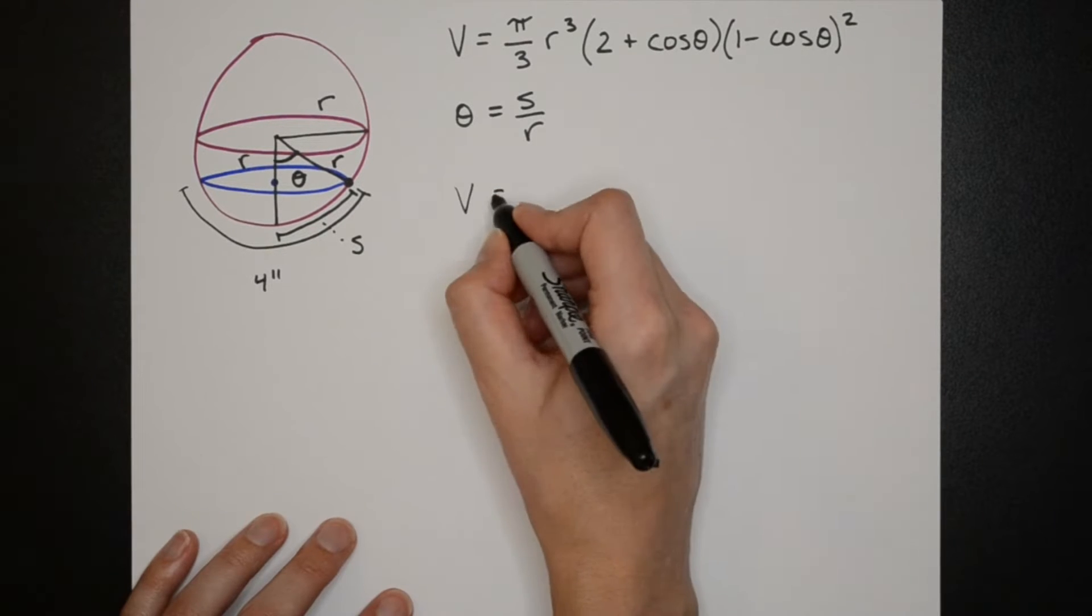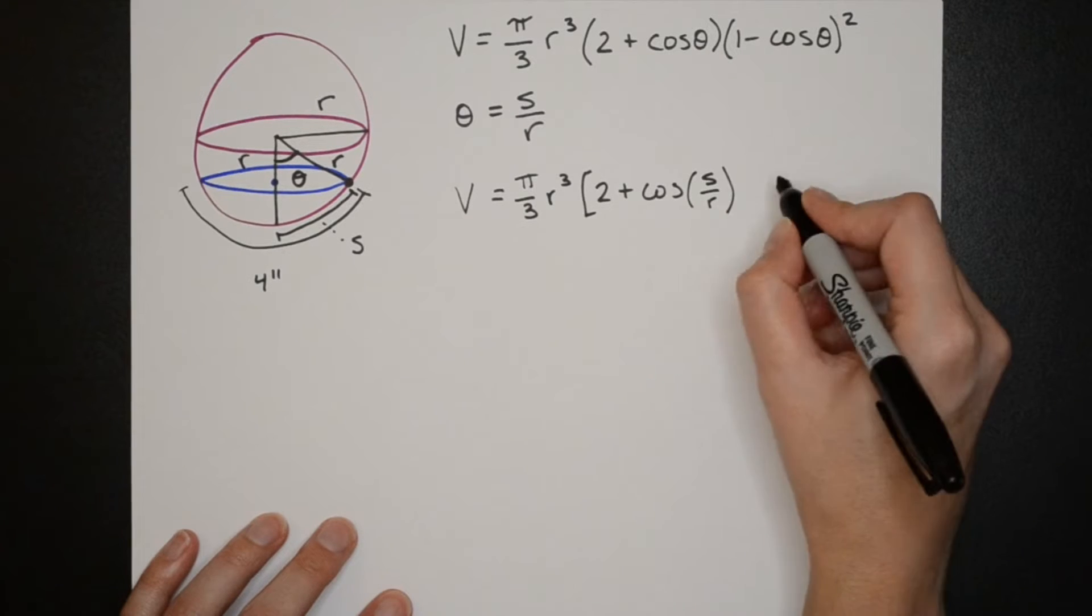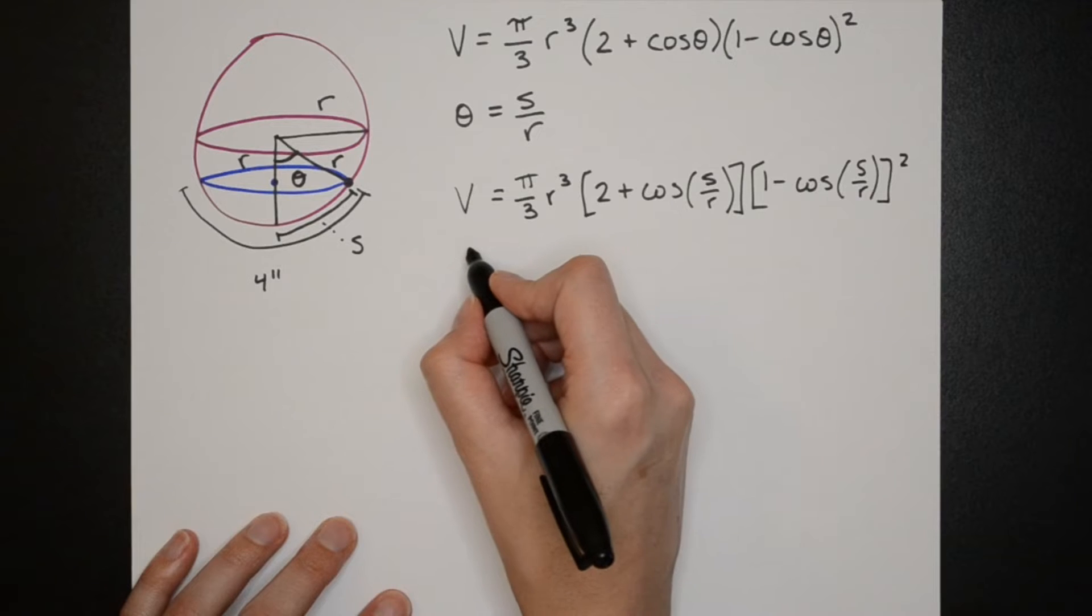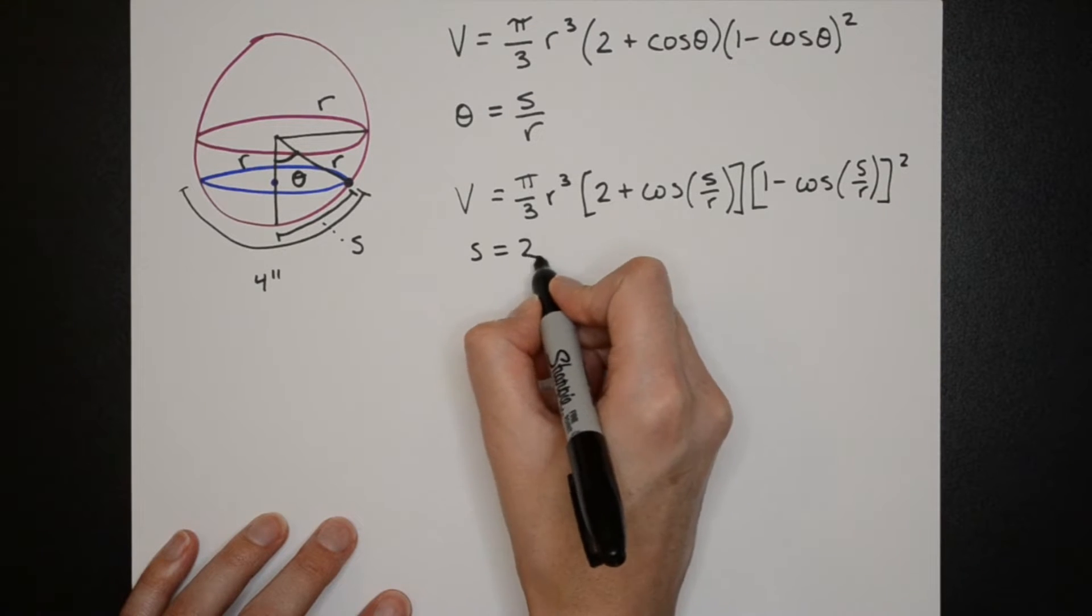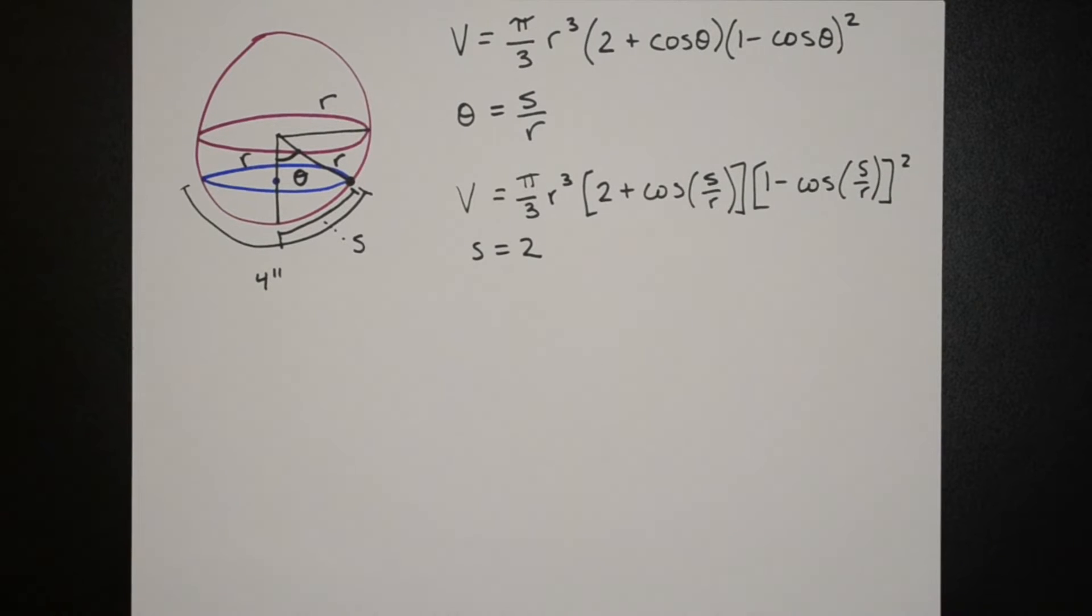We can plug theta into the volume equation so now volume is in terms of radius as well as arc length. And since we're using a four inch by four inch piece of aluminum foil we know that s is going to be two inches.